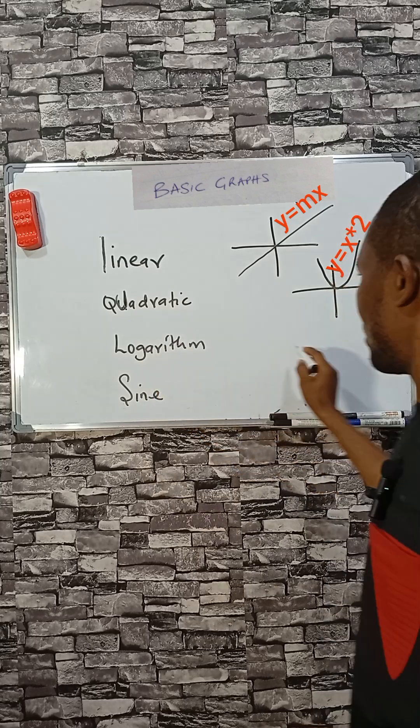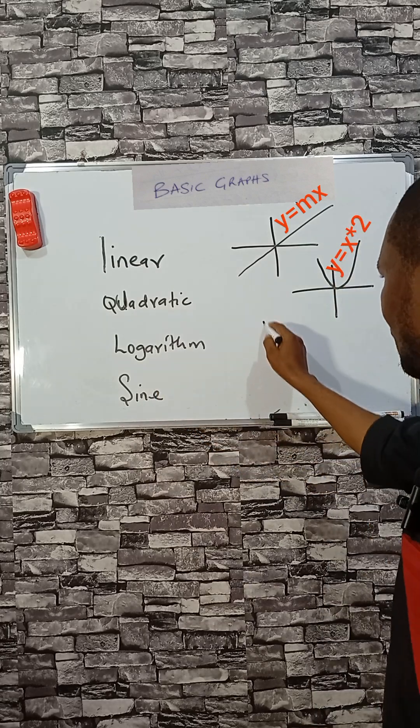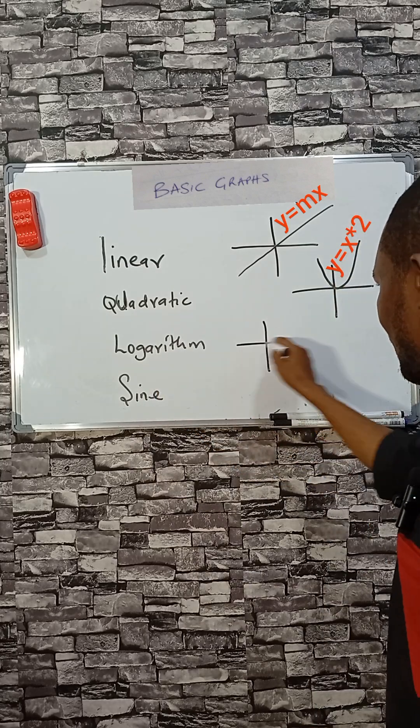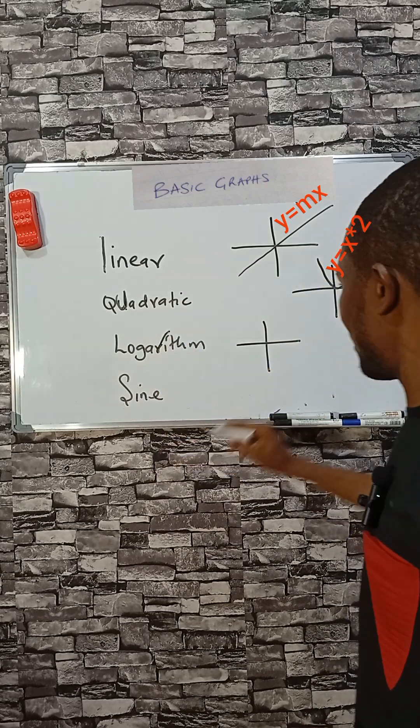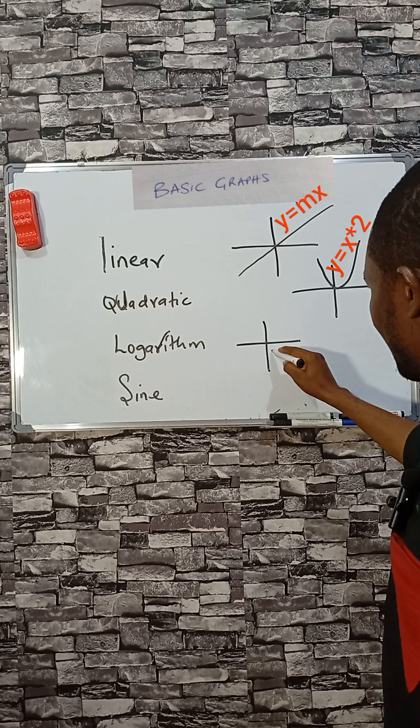A logarithm graph looks just like the letter R, like this.